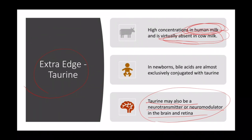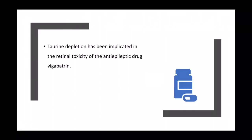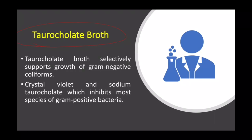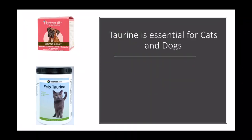Even though humans can synthesize taurine, in newborns the liver may be immature, making breast milk a very important source of taurine. A pharmacology fact: taurine depletion can be the reason for the retinal toxicity of the anti-epileptic drug vigabatrin. Taurocholate broth is used for the selective growth of gram-negative coliforms, as taurine in the broth inhibits the growth of gram-positive species.